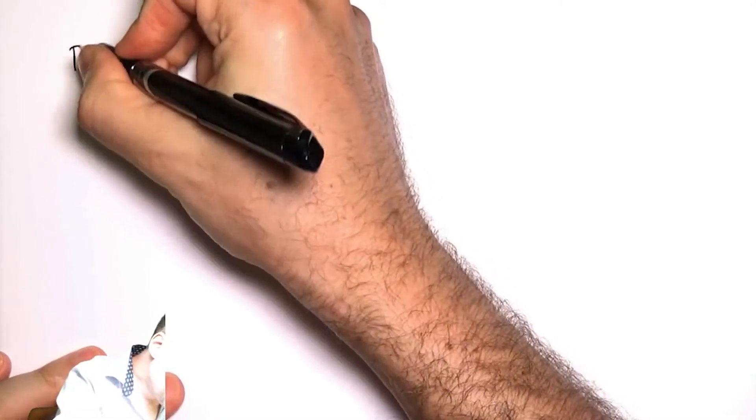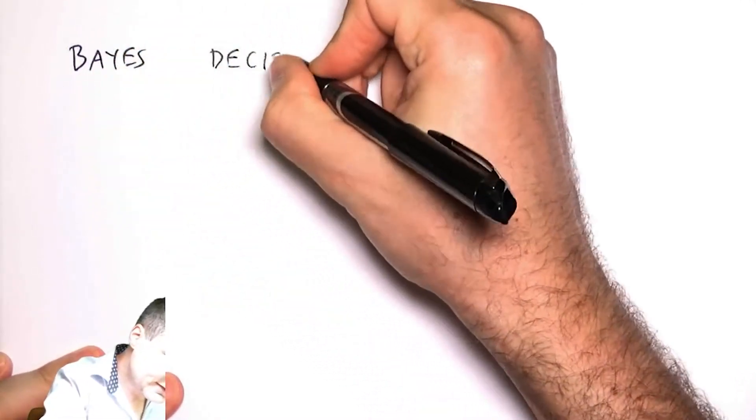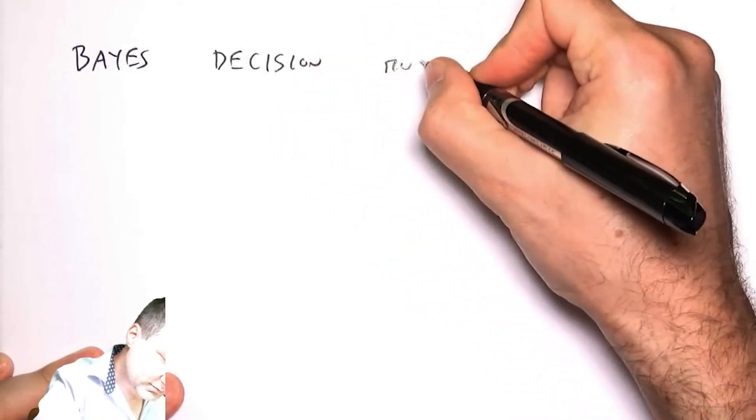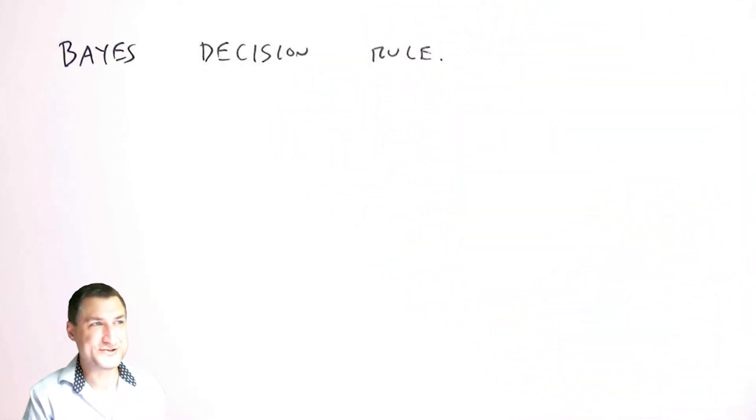I want to introduce very quickly what's called the Bayes decision rule, and this is something that we're going to come back to later. Let me just talk about it right now because it makes sense in the context of these class conditional probabilities.